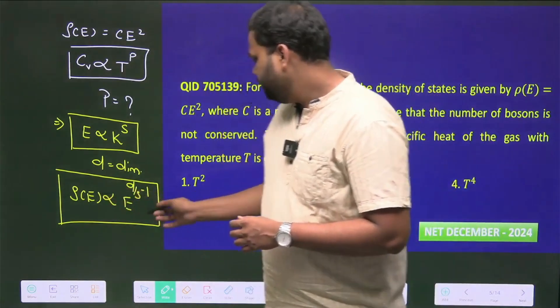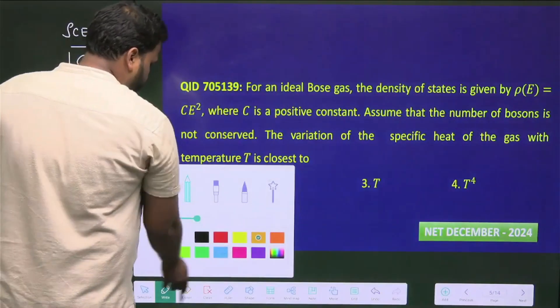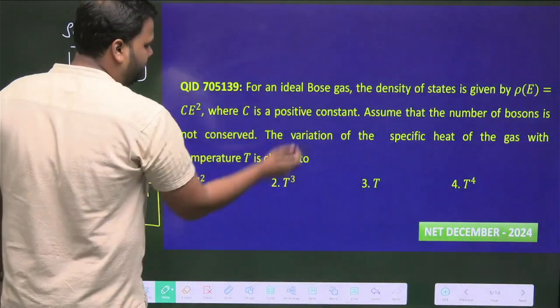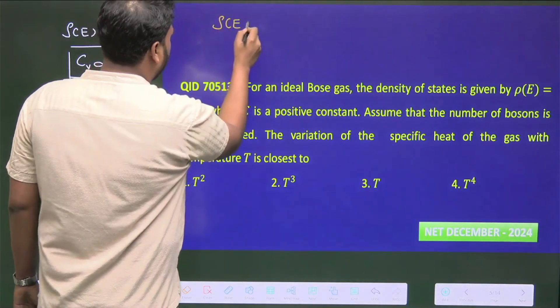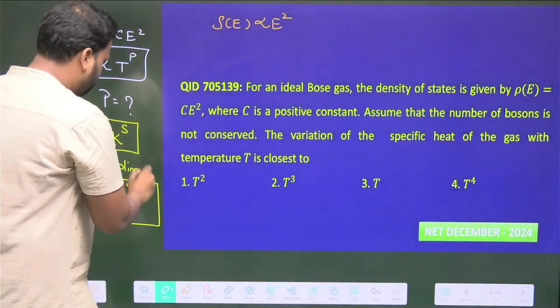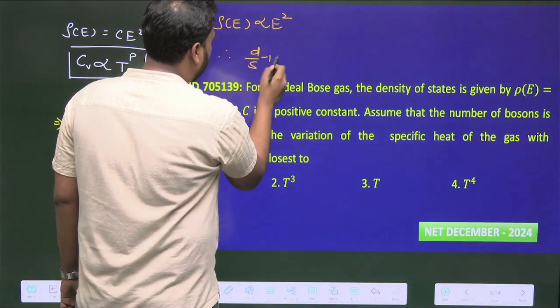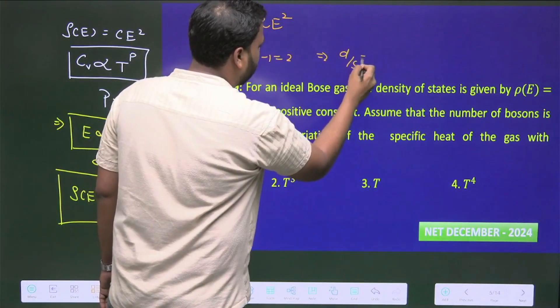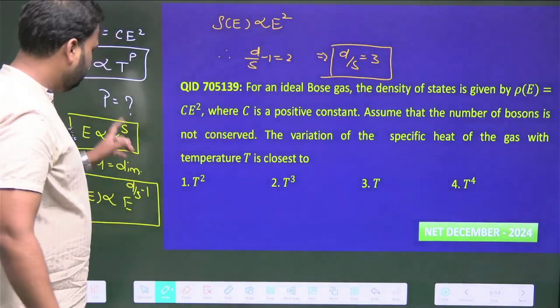The density of states ρ(E) is proportional to E², so if we compare both sides, we get D/S - 1 = 2, which implies that D/S = 3.